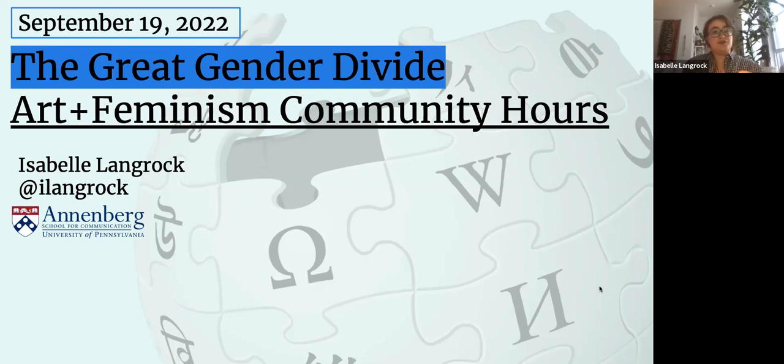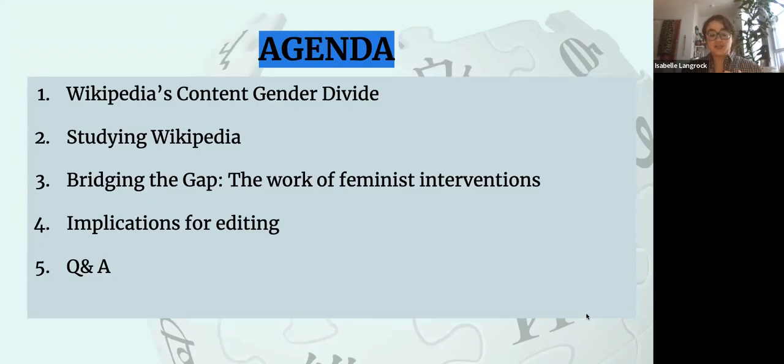So I'll review some of my research here, but I want to start by diving into the state-of-the-art research on Wikipedia's content gender divide. Then I'll quickly position my focus on studying Wikipedia before getting into really the meat of our discussion here, which is a recent article I published with my advisor on bridging the gender gap in Wikipedia. I have a couple of implications for editing that arise from this research, and hopefully that will be of interest to you guys, as well as a nice launch pad for some discussion at the end.